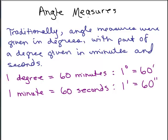We're going to continue a little bit more with angle measures. Traditionally, angle measures were given in degrees with part of a degree given in minutes and seconds. So first of all, what's a minute and a second?